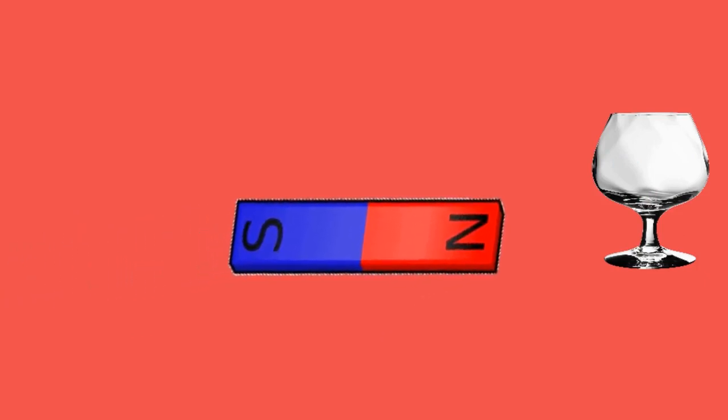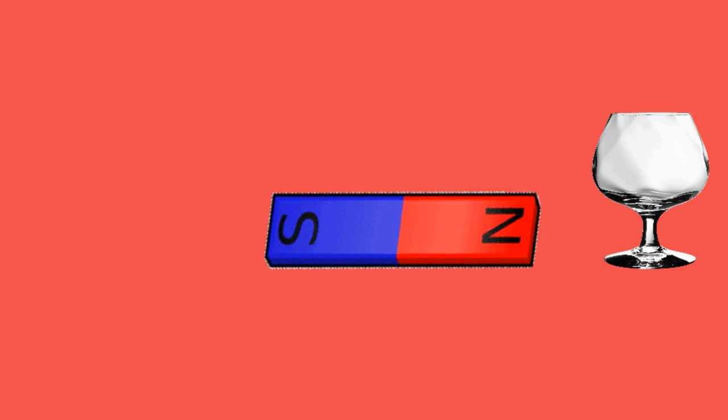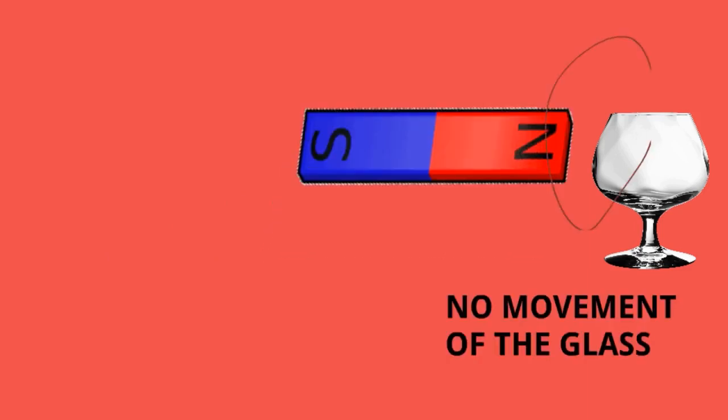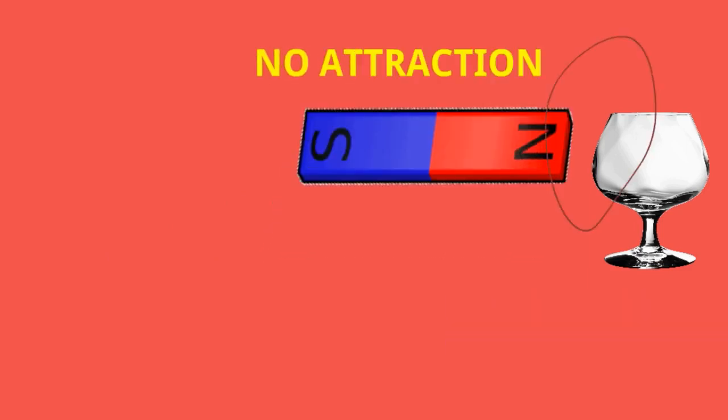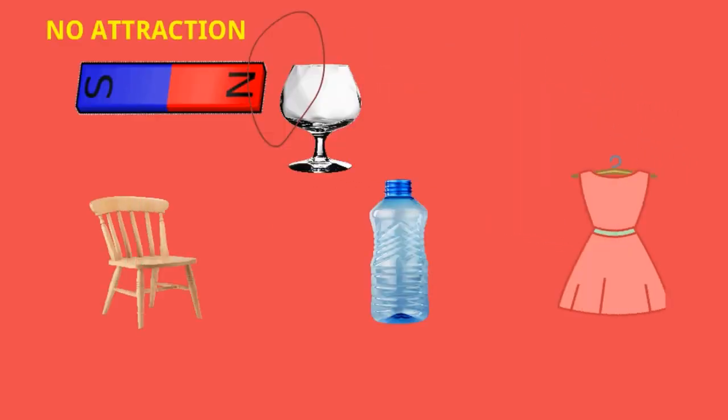This is a magnet. It has north and south pole and this is a glass. We'll do a very simple test. We'll try to take this magnet towards the glass. See there is no attraction between this magnet and the glass. In our example we have already seen that wooden chair, plastic bottle, fabric, these all are not attracted. So magnet doesn't attract non-metals.